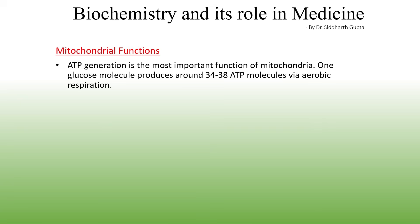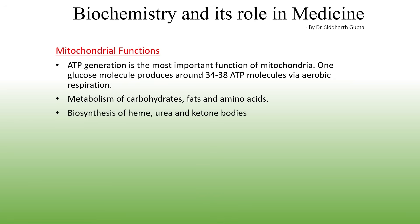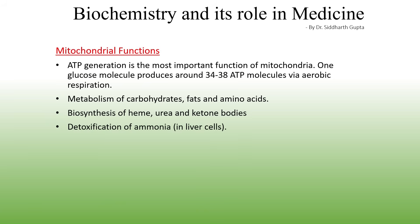The primary function of mitochondria is ATP generation — the complete oxidation of one glucose molecule yields around 34 to 38 ATP molecules. Mitochondria are also involved in the metabolism of carbohydrates, fats, and amino acids, as well as the biosynthesis of heme and urea. Additionally, mitochondria are involved in the synthesis of ketone bodies during prolonged fasting or starvation, the detoxification of ammonia in liver cells, hormone signaling, and apoptosis.